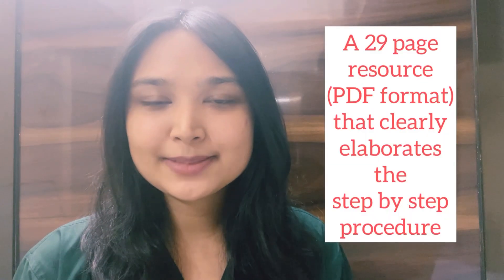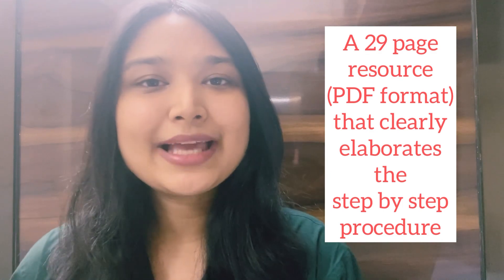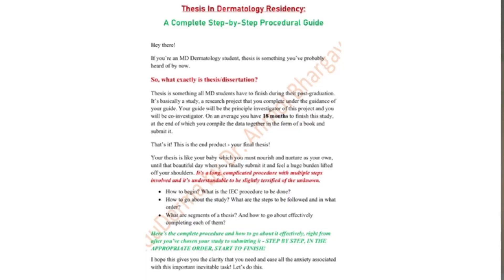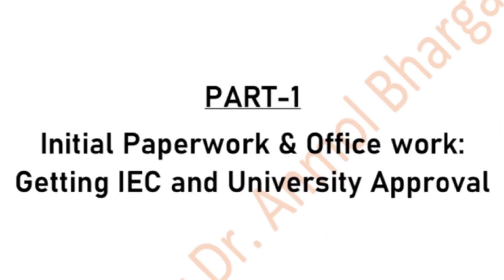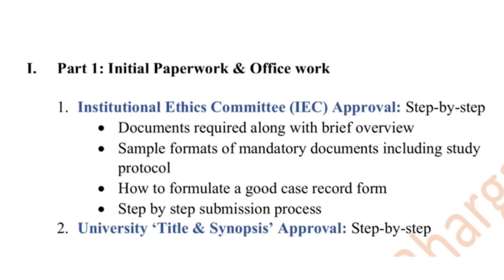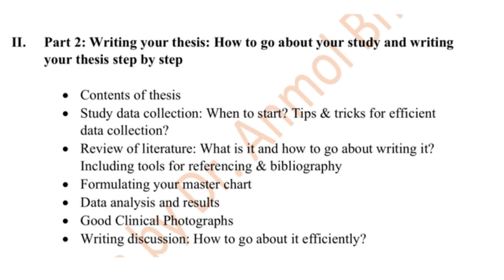Based on my own experience, I've created this PDF document that clearly elaborates step by step on how to go about doing your thesis. It is a 29-page PDF document divided into two parts. The first part mainly addresses the office work and the paperwork — the initial paperwork associated with your thesis. That is the entire process of getting the IEC approval and the procedure to get the university title and synopsis approval. I've also mentioned the documents that are required for this process and attached sample formats so that you know how to prepare those documents. In the second part, I've mentioned the exact step-by-step procedure of doing your thesis and how to write your thesis. Here I've addressed very fine details that I think are very important and you must know regarding how to conduct your thesis and how to write it, things that we are not really aware of as first years.